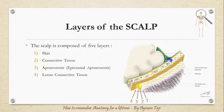Then a layer of loose connective tissue that provides an easy plane of separation between the upper three layers and the pericranium, and finally the pericranium, which is the periosteum of the scalp bones and provides nutrition to the bone. Together, they form the word 'scalp'.